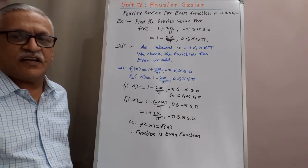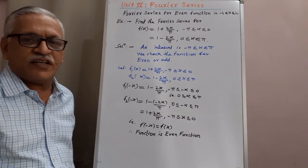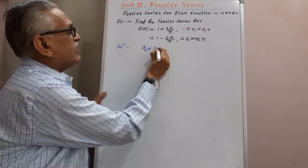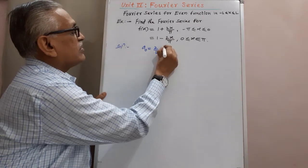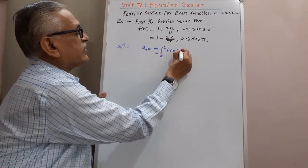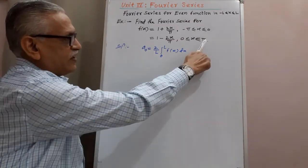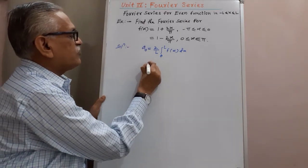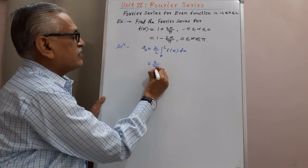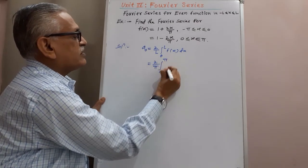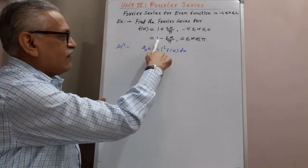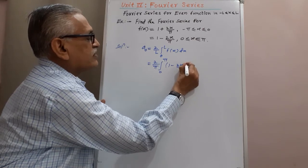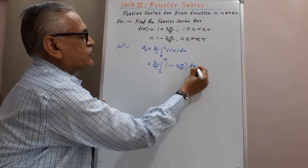As it is an even function, bₙ = 0, and we require to find only a₀ and aₙ. a₀ is given by (2/l) × integral from 0 to l of f(x) dx. Here the value of l is π, as it is the −l to l type. Therefore a₀ = (2/π) × integral from 0 to π of (1 − 2x/π) dx.